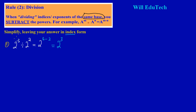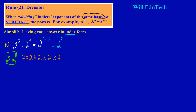Why is it that when working with indices of the same base we subtract the powers? Let's look at the concept — this is a second method of working out a problem like this. Up top, 2^5 means two is multiplying itself five times: two times two times two times two times two. Let's count them: one, two, three, four, five — two multiplying itself five times.